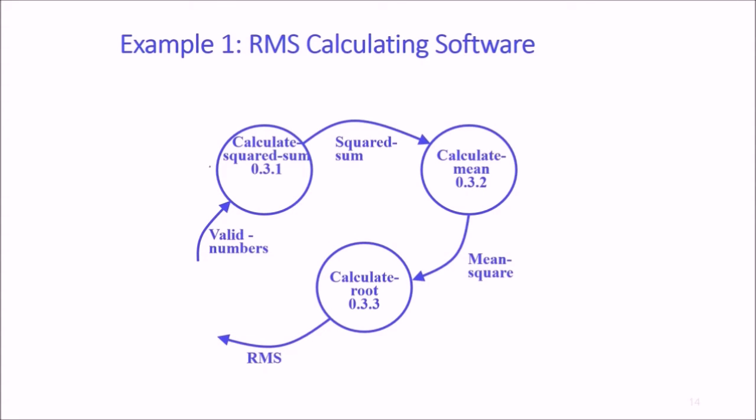We have calculated squared sum. We validate the number, the squared sum is used to calculate mean, and this mean square is again used to calculate root. This is called root mean square.